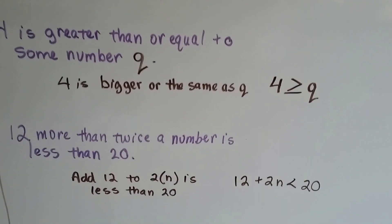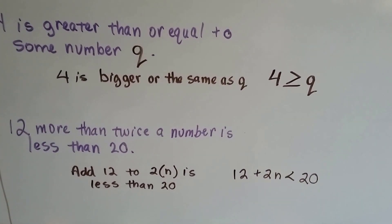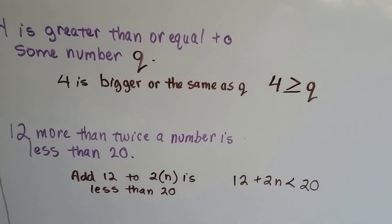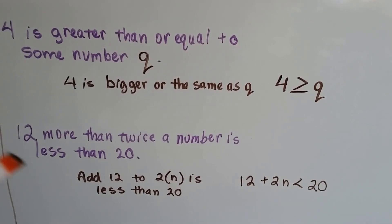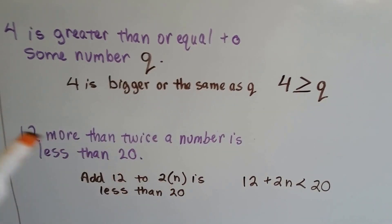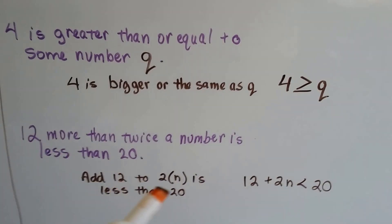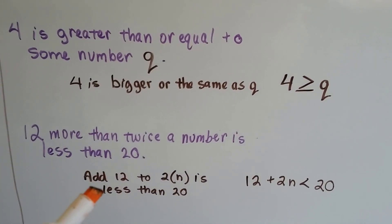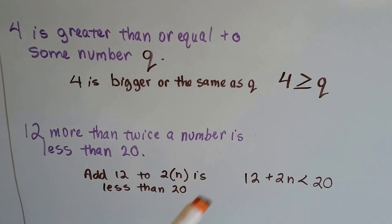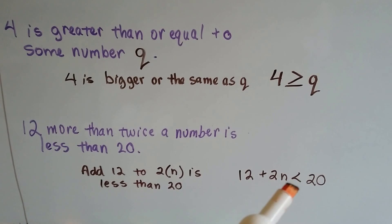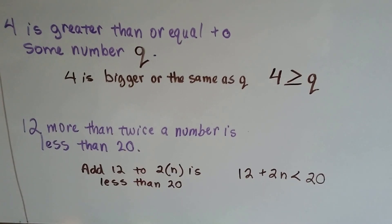How about this one? 12 more than twice a number is less than 20. 12 more than twice a number. Well, twice a number is 2N, isn't it? And if we have 12 more, we're going to add 12 to 2N. And it's less than 20, so we add 12 to 2N. And it becomes 12 plus 2N less than 20.